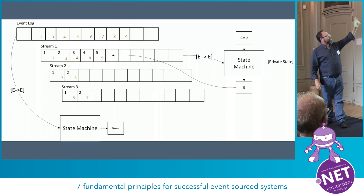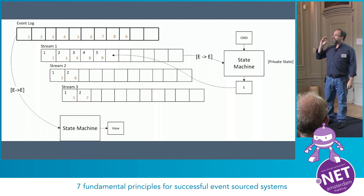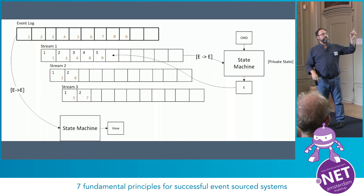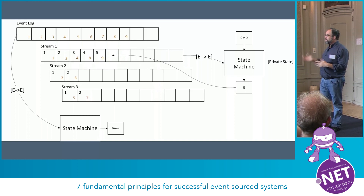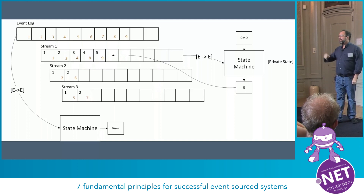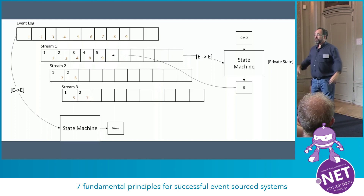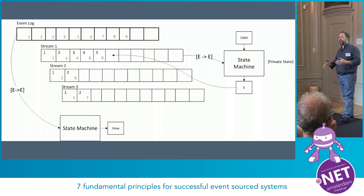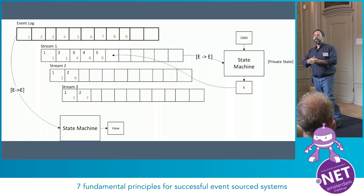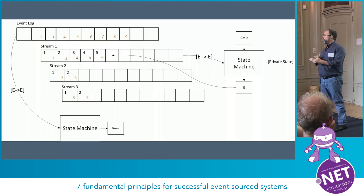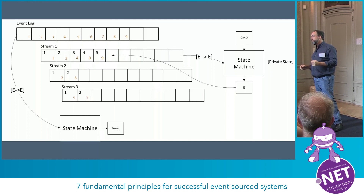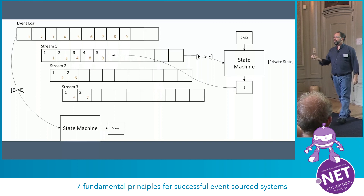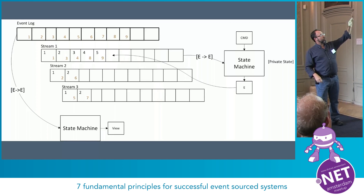I want to make sure that that state machine produces the same expected result and allows me to change that result upon request. If the business decides that this series of events now means something different, if I'm event-sourcing, I can do that. For example, in credit card monitoring, if I change the window for late payments from one late payment in a month to one late payment in 15 days, that can change credit scores even though the facts remain unchanged. We want to be able to do that between version one and version two.